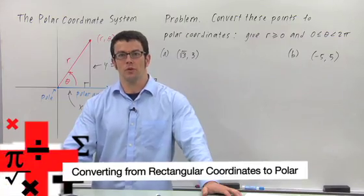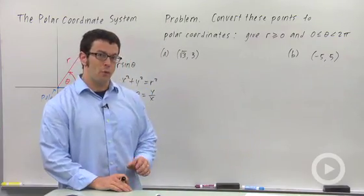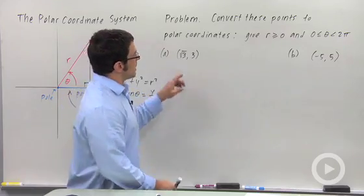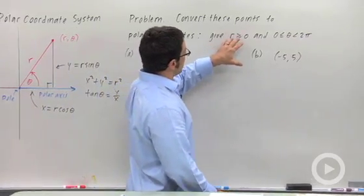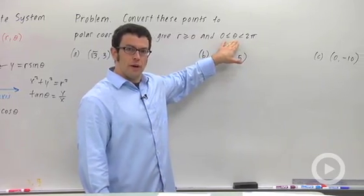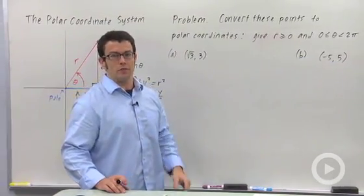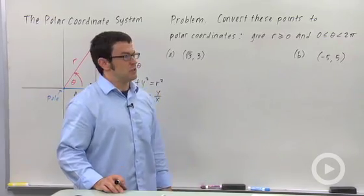Converting from rectangular coordinates to polar coordinates can be tricky because the polar coordinates for a point are not unique. So let's make a rule that we're going to try to get r to be greater than or equal to 0 and theta between 0 and 2π. This will allow us to get a unique set of polar coordinates for a point with a lot less confusion.